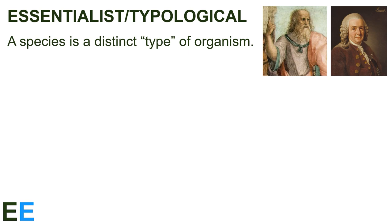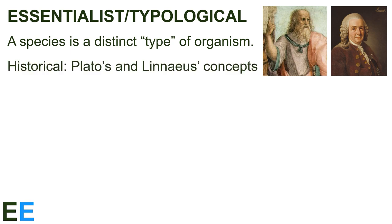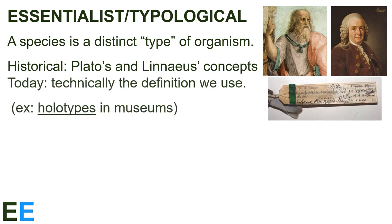The first species definition we'll look at is called the essentialist, or typological species definition. According to this definition, a species is a distinct type of organism that is different from all other types of organisms. Historically, this matches Plato's and Linnaeus' concepts of what a species is. They envisioned species as unchanging and fixed things. Each of these men were studying biology before evolution was discovered, so they had no concept of how species may change into other species, or how they may be blurred-lined between the borders of species.